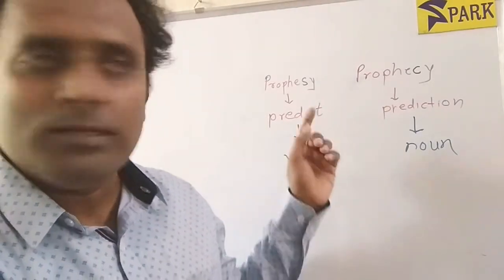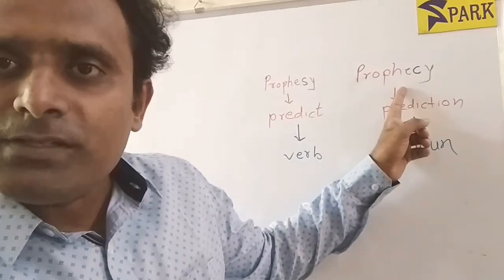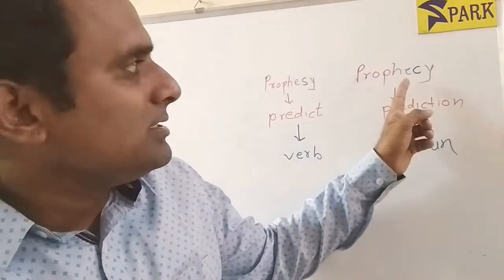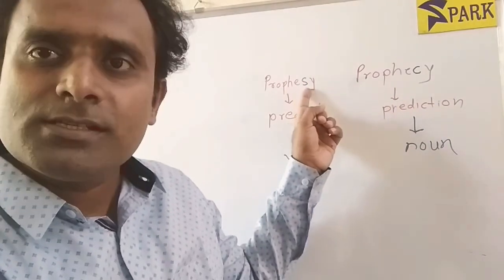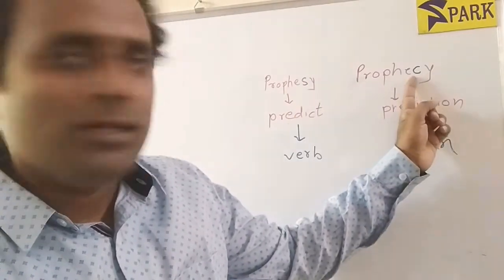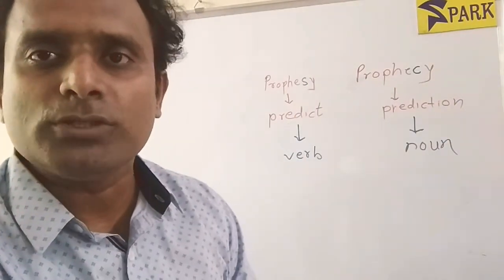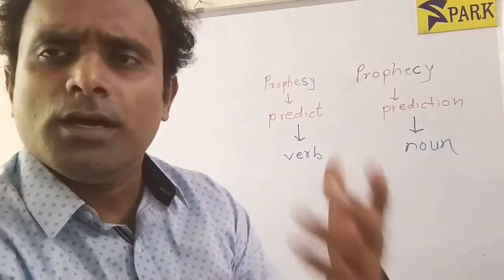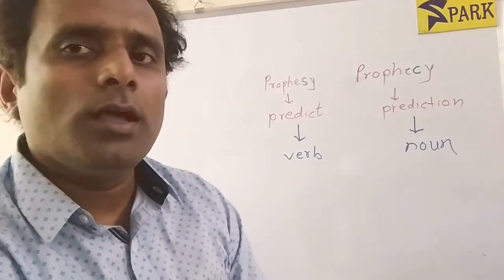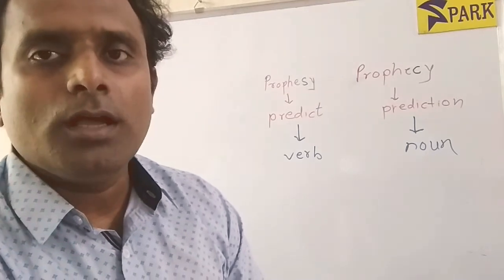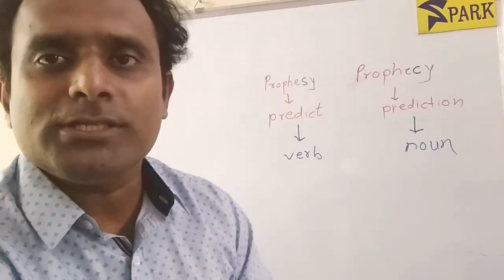Prophesy — the spelling is S-Y, and prophecy — the spelling is C-Y. So there is a difference of S and C. The spelling is also different. The pronunciation is slightly different. The meaning is almost the same, but the grammatical usage is different.